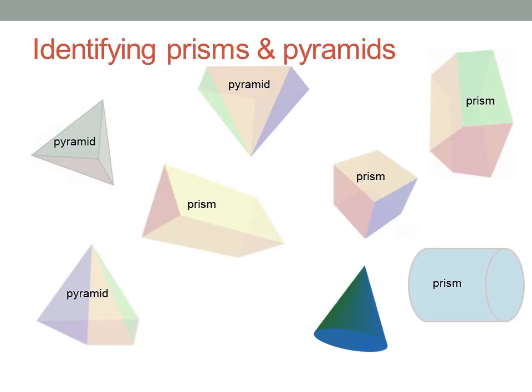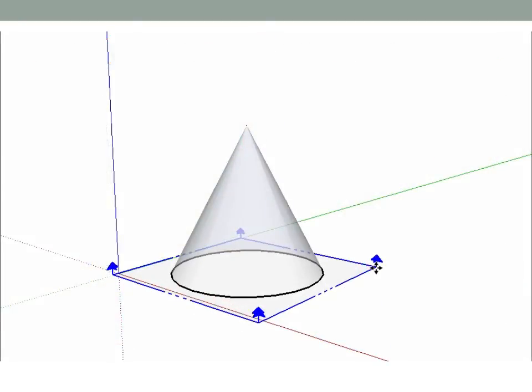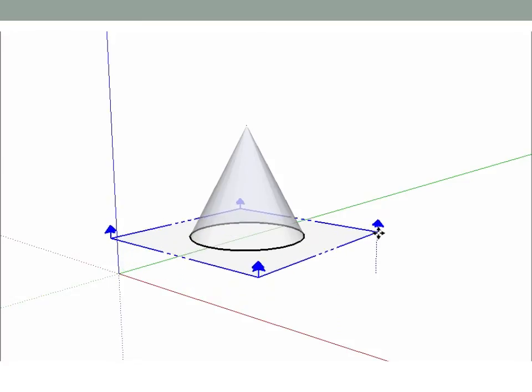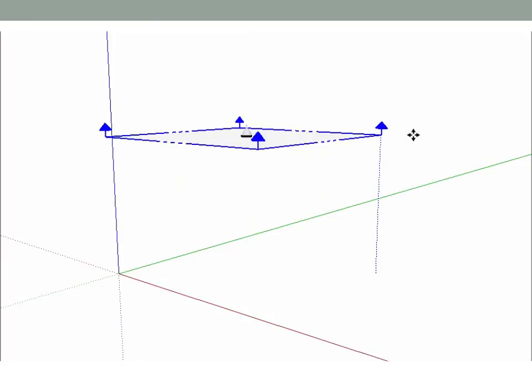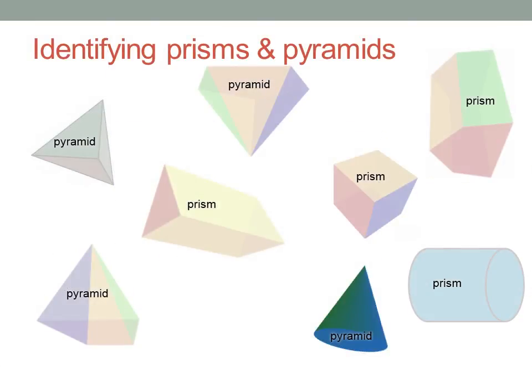Similarly, a cone is not a polyhedron, because it has a curved face, but it is a pyramid. Again, take the circle as the base. There's a circular cross-section getting smaller and smaller to a single point at the apex. It's a circle-based pyramid.